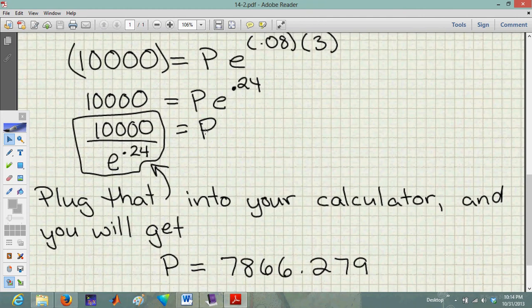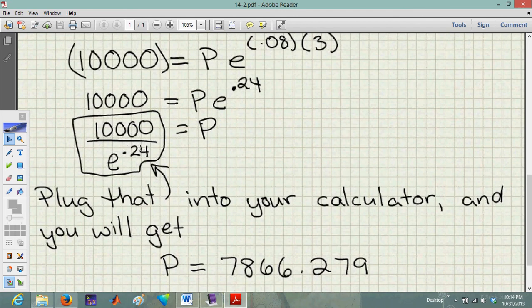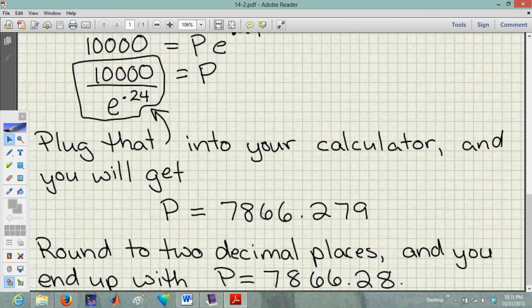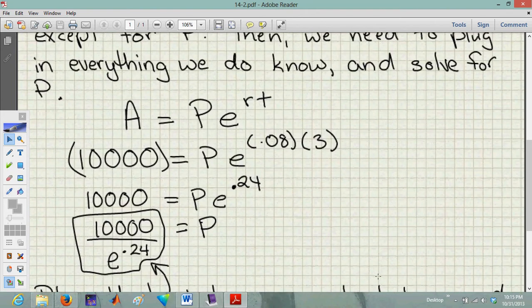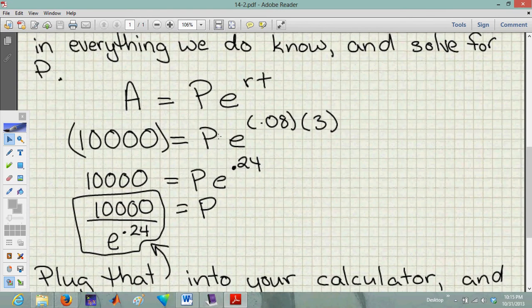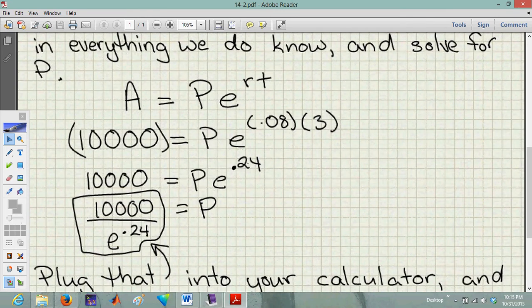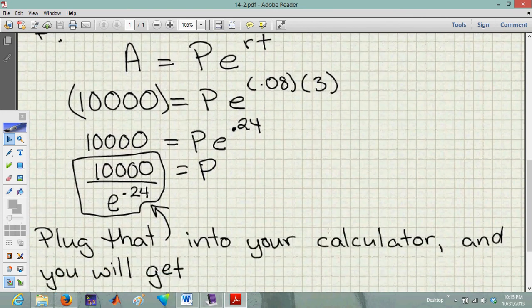Now to get P by itself and solve for P, I just need to divide 10,000 by E to the 0.24 power. Plug that into your calculator. You're going to get P equals this guy here. When you round to two decimal places like they ask, you end up with P equals $7,866.28. You didn't have to do any crazy exponent things. There were no logs because we weren't solving for anything in the exponent. We were just solving for P all along. Plug in what you know and solve for what you don't know. That's really all we're doing in these types of questions.